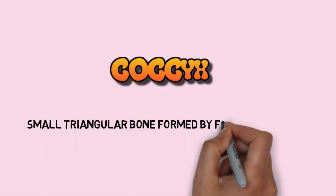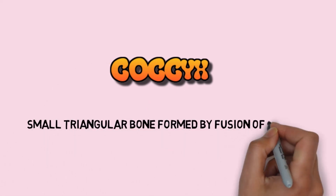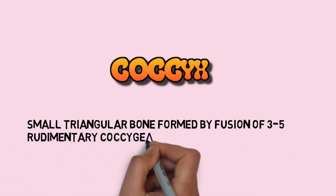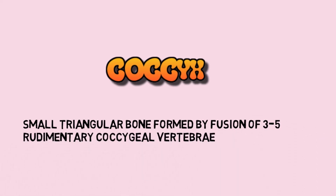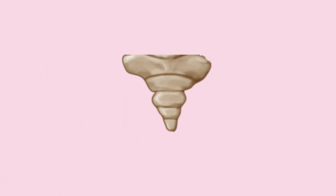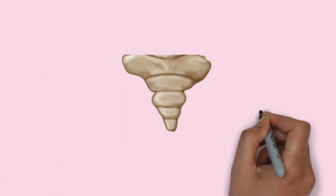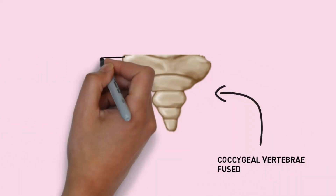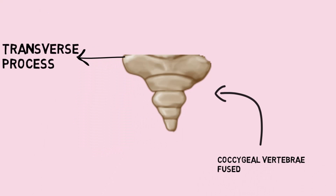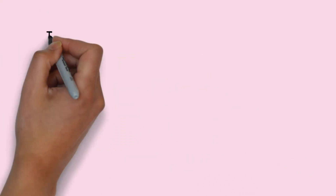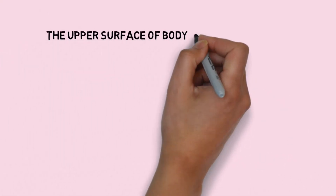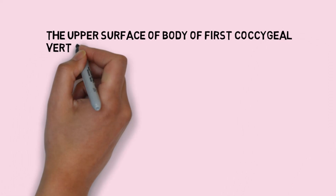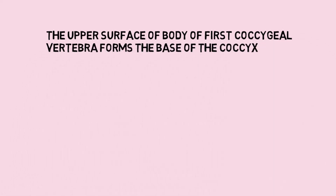Coccyx is a small triangular bone formed by fusion of 3 to 5 rudimentary coccygeal vertebrae. This is the coccyx, which has fused coccygeal vertebrae, and this is the transverse process of the coccygeal vertebra. The upper surface of the body of the first coccygeal vertebra forms the base of the coccyx.